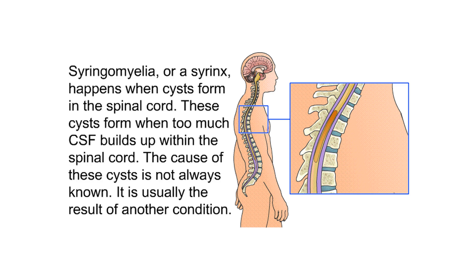Syringomyelia, or a syrinx, happens when cysts form in the spinal cord due to too much CSF building up. The cause of these cysts is not always known and is usually the result of another condition.